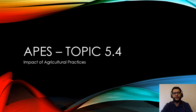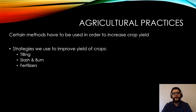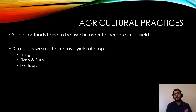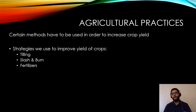Hey guys, this is Mr. V and this is APES review video topic 5.4: the impact of agricultural practices. In the previous video we spoke about the green revolution and talked about some agricultural practices. Today we're going to focus more on those methods — whether they increase crop yield and the downsides. The strategies we've been using are tilling, slash and burn, and fertilizer changes.